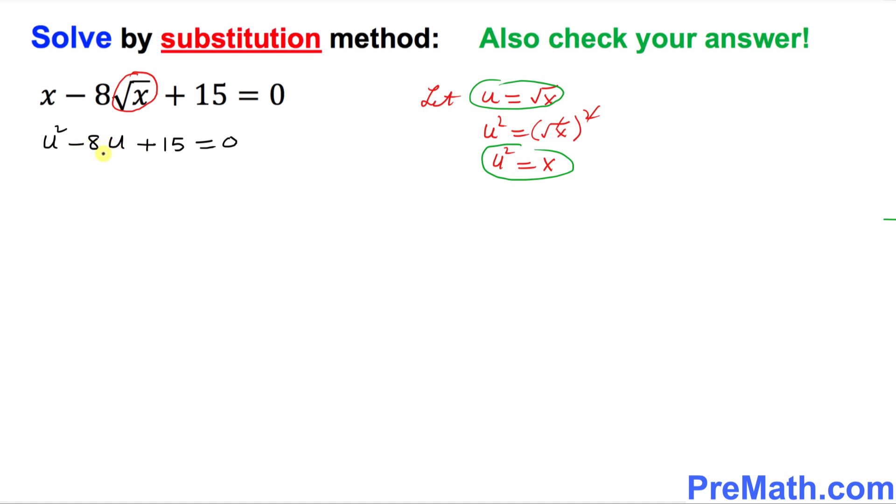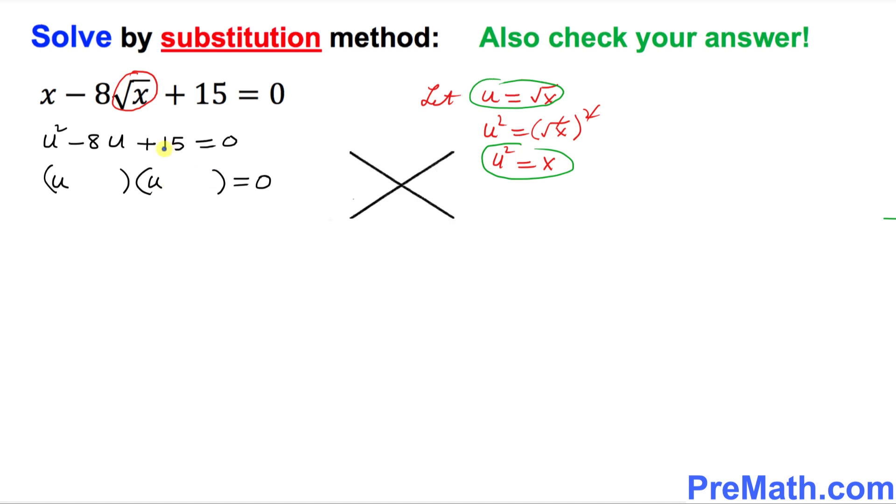Now you can see that this is a quadratic equation. We can easily factor this one out and solve. So I can put two parentheses equal to 0. Since we are dealing with the u variable, I'm going to put down u right up here and u here. Wherever you see this positive 15 on the right hand side, put it down right up here on the top of this x vector. And this middle number, negative 8, is going to show up at the bottom over here.